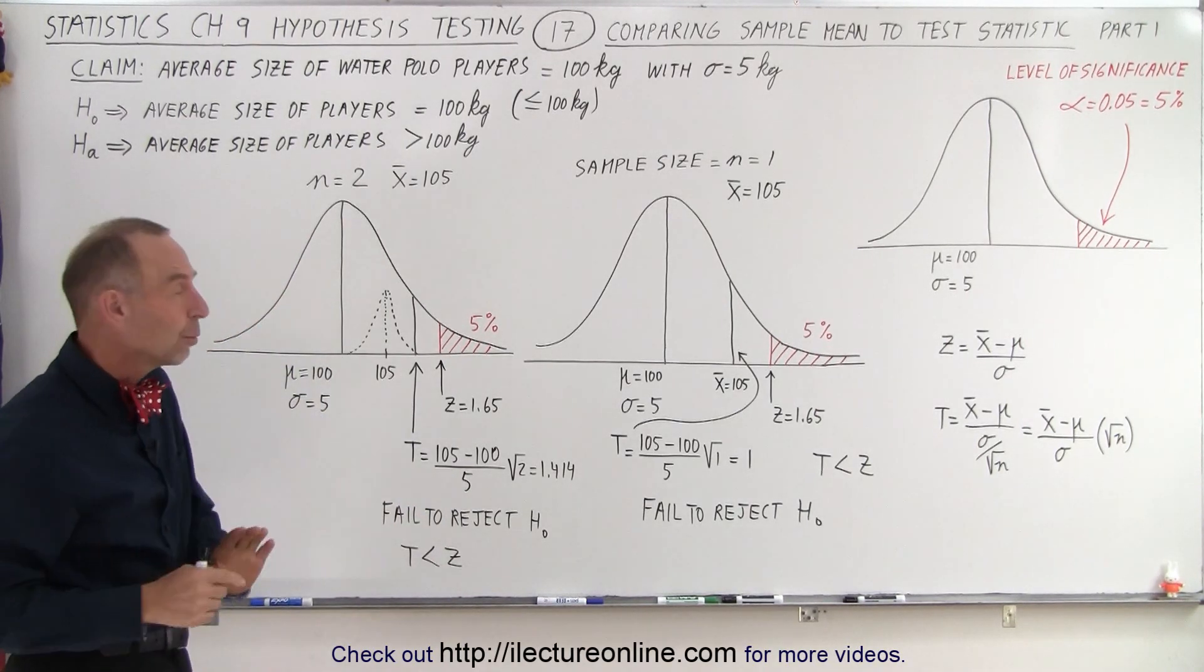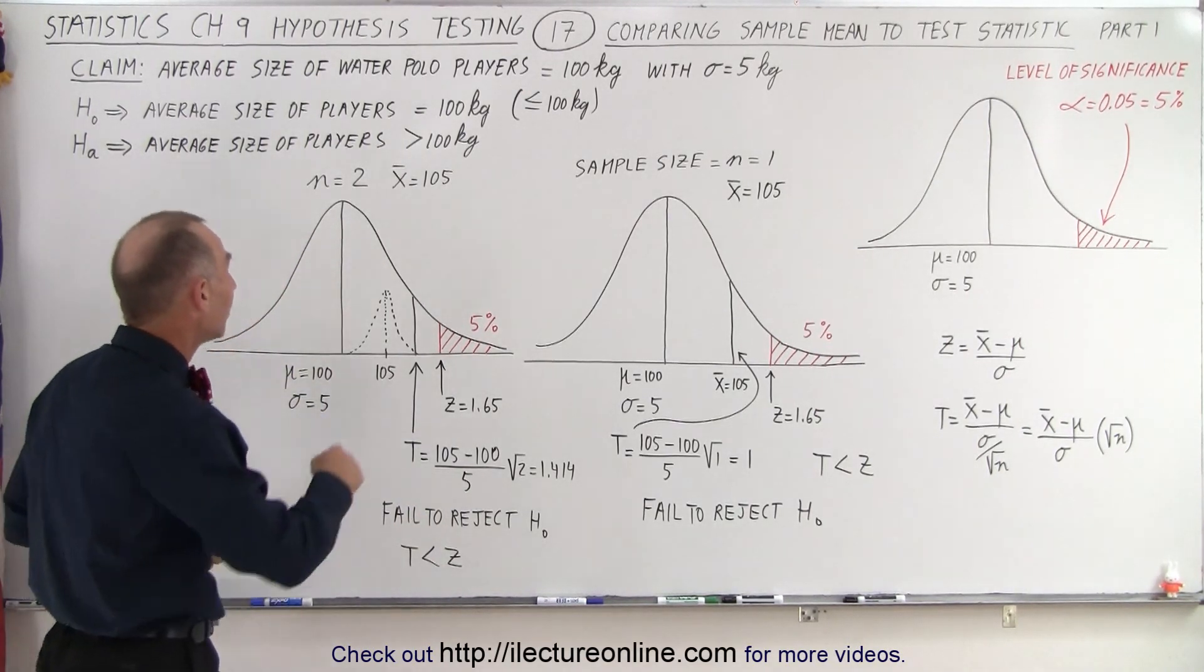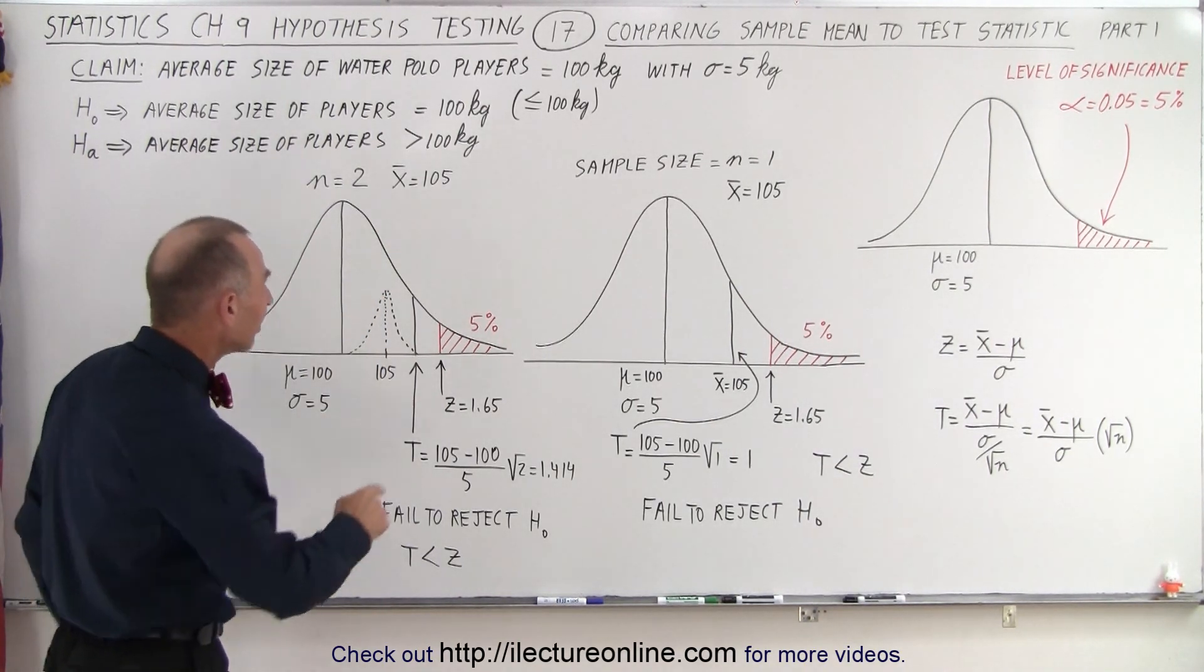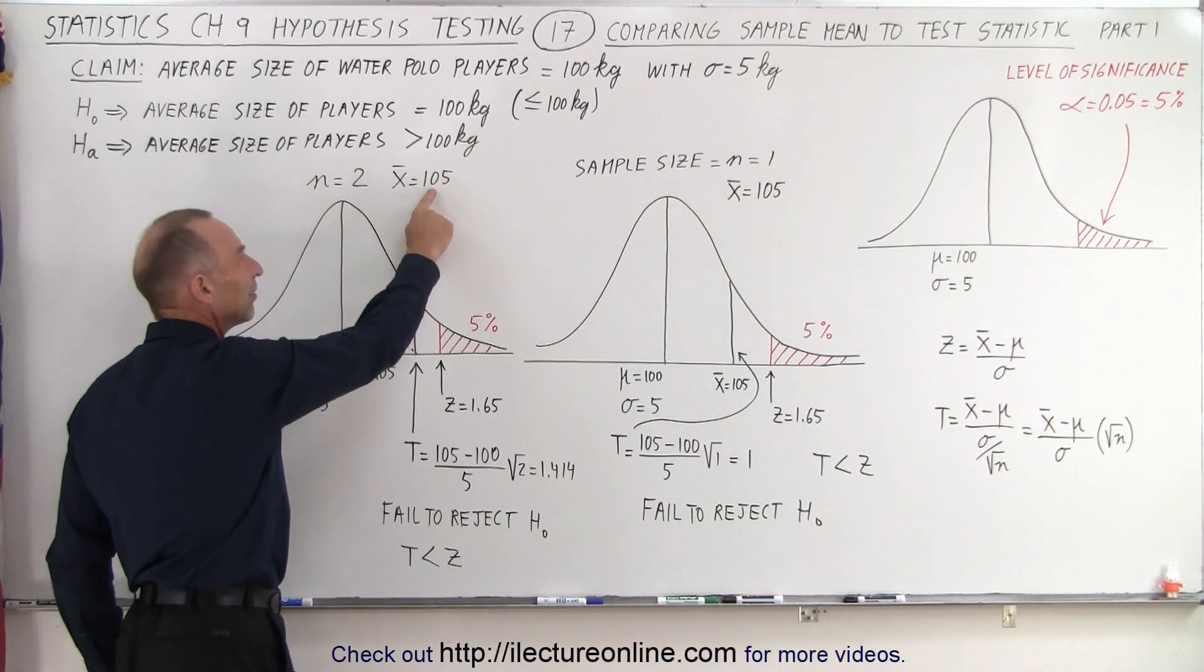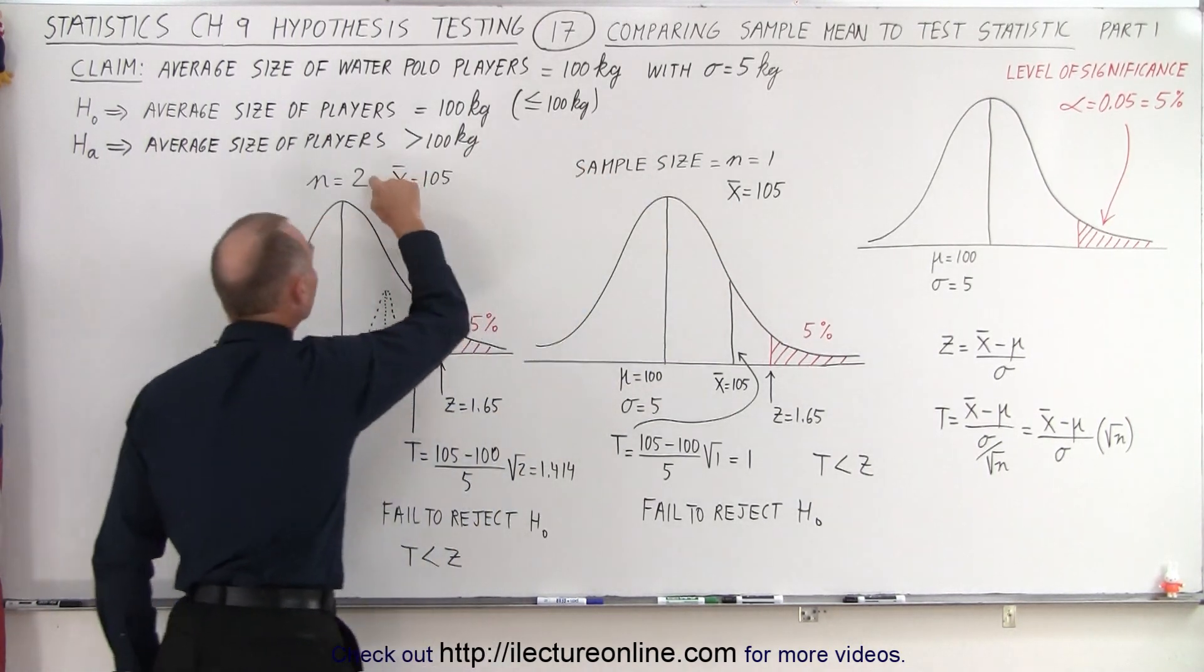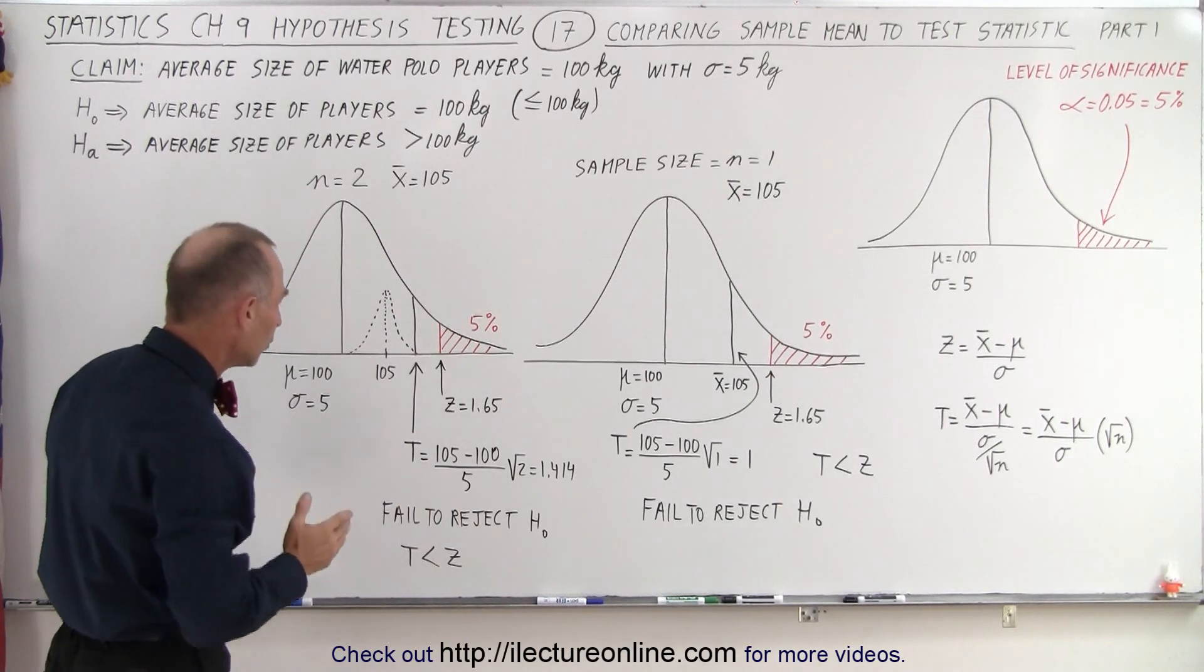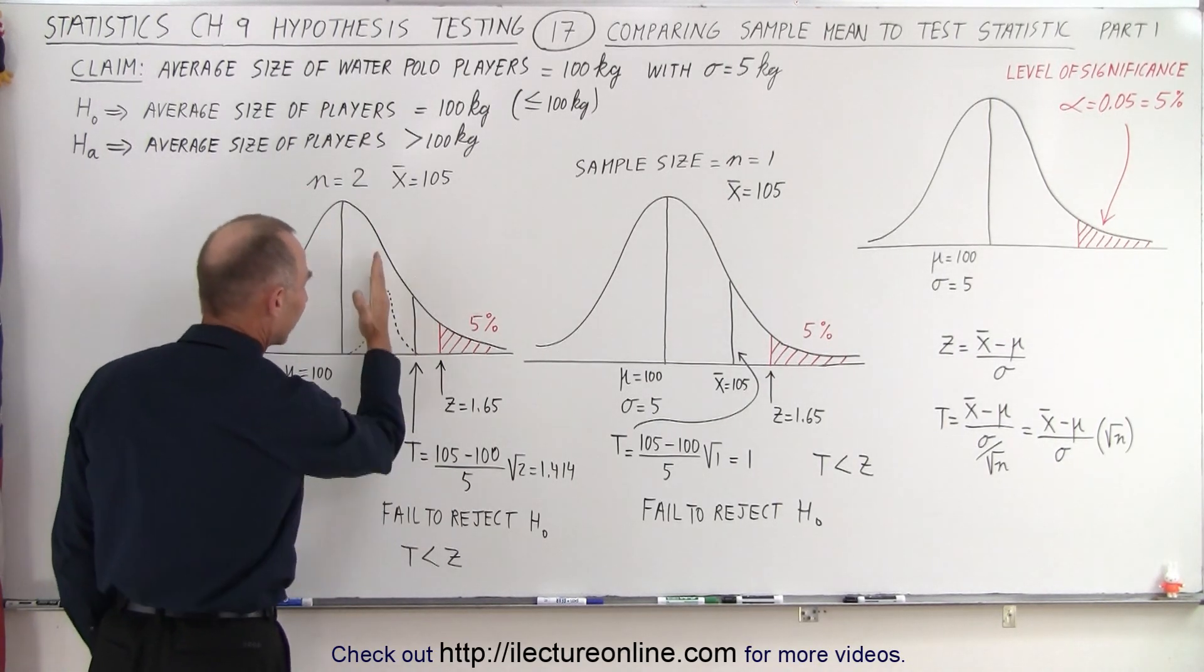What happens when we change the size of the sample? We now call it 2, sample size of 2. Still the mean of the sample is 105, so that didn't change, but we now have 2 players picked at random instead of just 1.